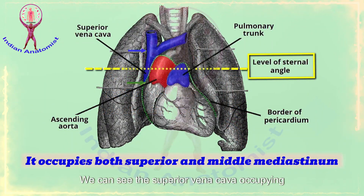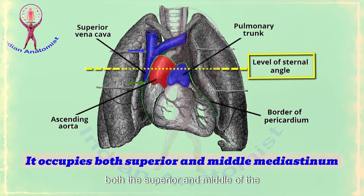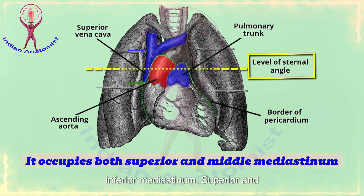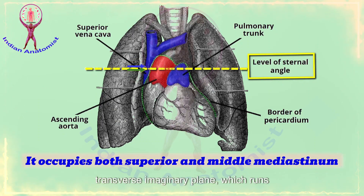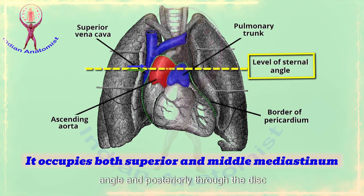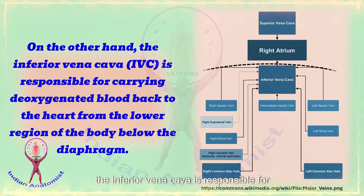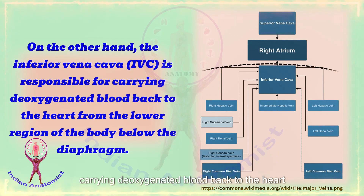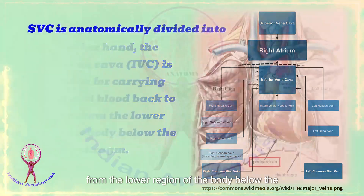In this picture, we can see the superior vena cava occupying both the superior and middle of the inferior mediastinum. The superior and inferior mediastinum are divided by a transverse imaginary plane which runs anteriorly through the level of the sternal angle and posteriorly through the disc between T4 and T5. On the other hand, the inferior vena cava is responsible for carrying deoxygenated blood back to the heart from the lower region of the body below the diaphragm.